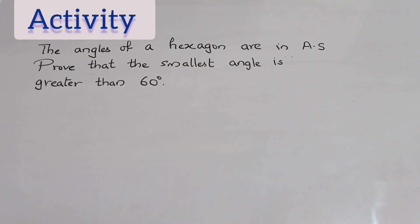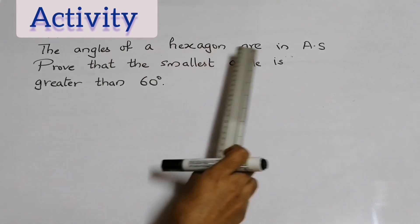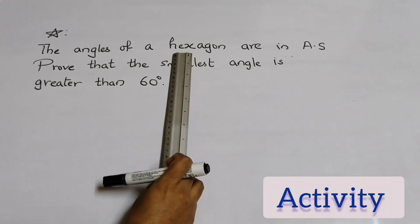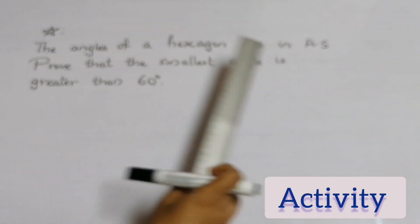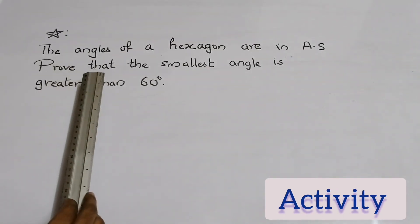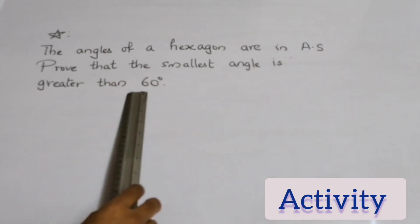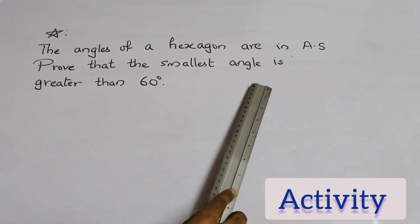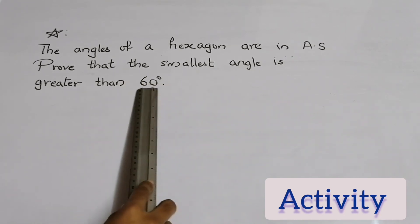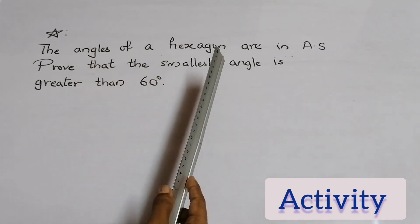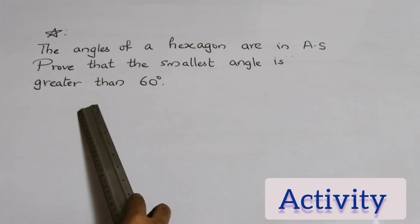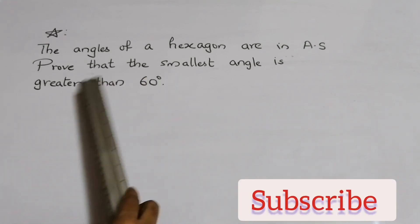Here is an activity for you. The angles of a hexagon — a six-sided polygon — are in arithmetic sequence. They did not mention regular polygon. To prove that the smallest angle is greater than 60 degrees. Similar to the pentagon proof: consider angles a1 to a6. If one angle is 60, the sequence is 60, 60+d, 60+2d, 60+3d, 60+4d, 60+5d. Find the sum of angles and try to prove this question.